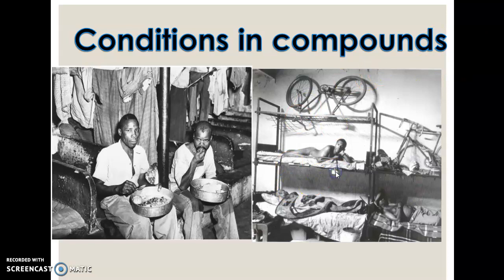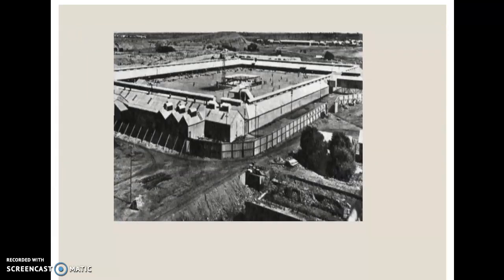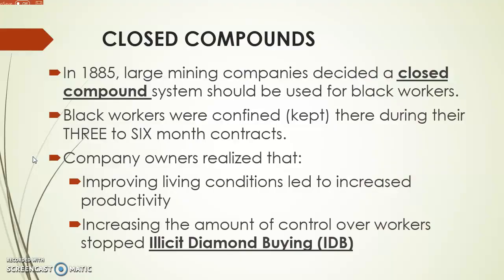This is how the compound looks. The reason it was called a closed compound is because people were not allowed to leave the compound. The only reason you would have to leave the compound would be to go to work on the mines, and then you'd have to come back into the compound after your workday was completed. There was not a lot of freedom — it was very restricted, and the way people were treated was not very good. Many people got sick and experienced very bad conditions. By 1885, large mining companies decided to use the closed compound system. Black workers were kept confined during their three to six month contracts, meaning no going in, no going out. Company owners realized that improving living conditions led to increased productivity, and increasing control over workers stopped illicit diamond buying.